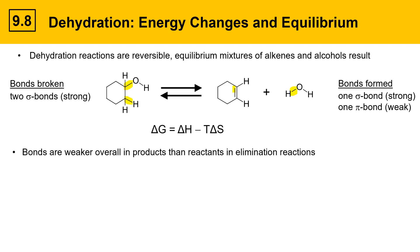In the reaction, some new bonds are formed: one sigma bond, which is relatively strong, and one pi bond, which is weaker. Here I'm highlighting the bonds that are forming — the sigma bond on the right and the pi bond on the left. When bonds form, energy is released, and the delta H for the reaction depends on whether stronger or weaker bonds overall are being formed or broken.